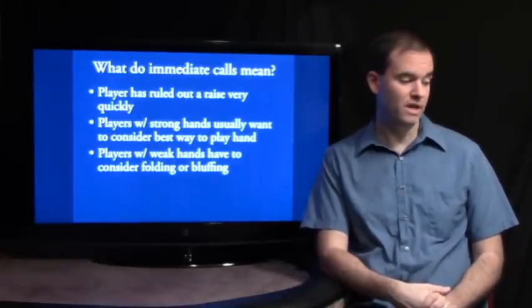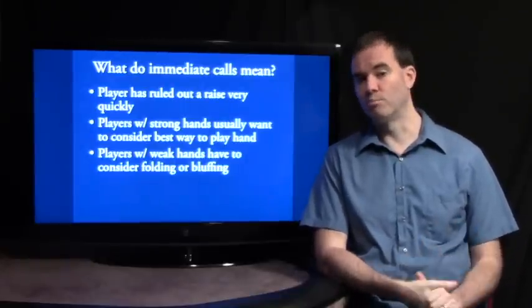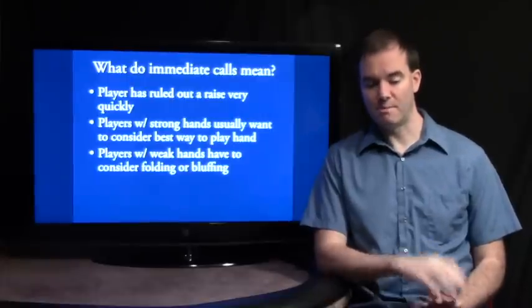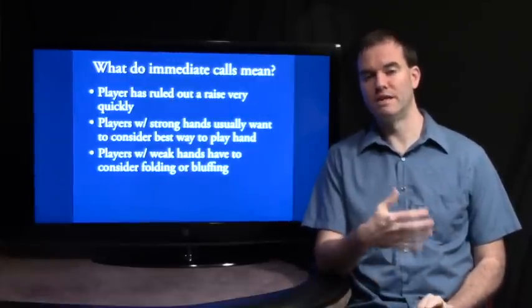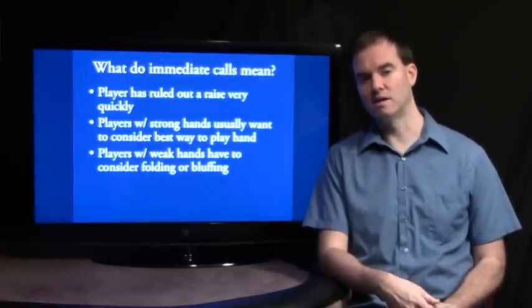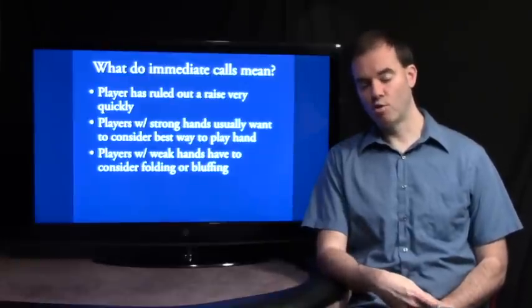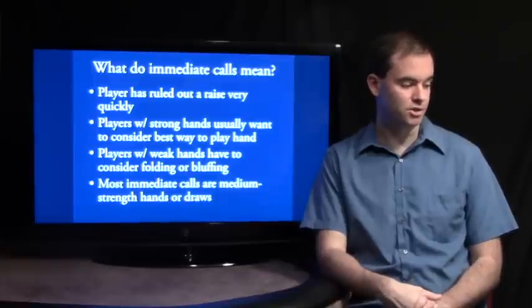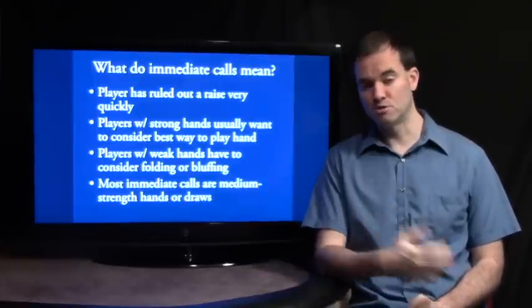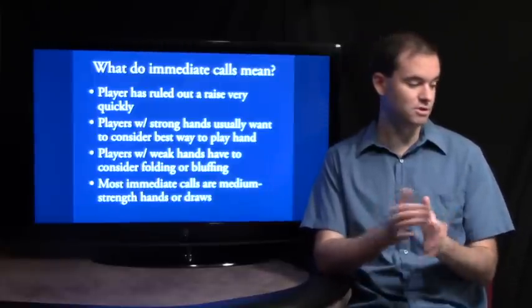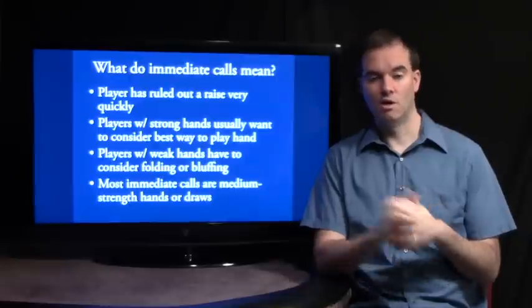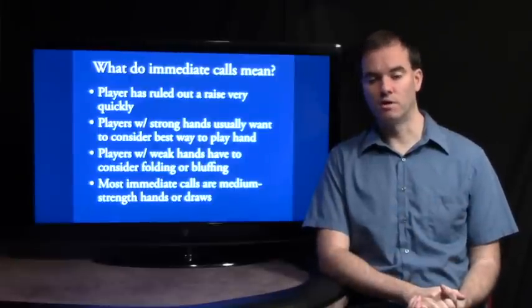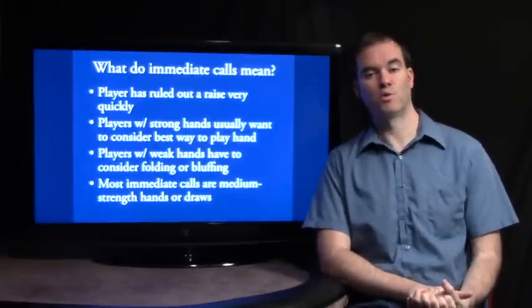Whereas players with very weak hands have to consider folding or bluffing. So that's the opposite end. If a player calls immediately, they've obviously ruled out bluffing or folding immediately. And this makes us very sure that most immediate calls are going to be medium strength hands or draws. They're right in that middle strength range where it's not strong enough to raise, but it's worth an obvious call.